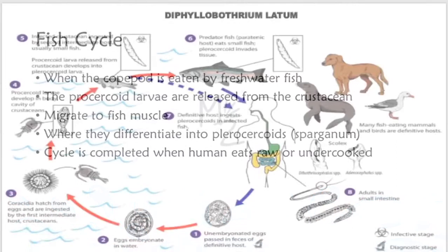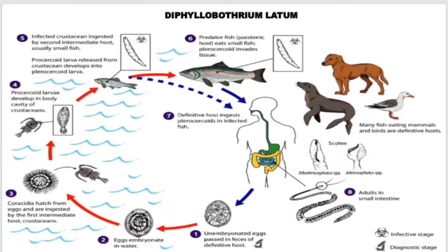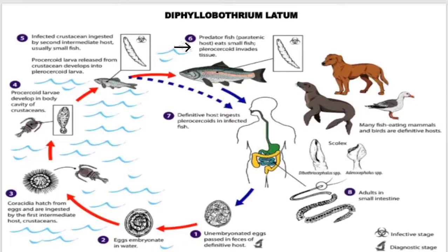Diagrammatic representation of the life cycle: unembryonated eggs are passed in the feces of the definitive host. The eggs embryonate in water and form coracidia, which hatch and are ingested by the first intermediate host, the crustacean. Procercoid larvae develop in the body cavity of the crustacean. An infected crustacean is ingested by the second intermediate host, usually small freshwater fish. The procercoid larvae develop into plerocercoid larvae in the fish muscle. Predator fish may then eat the smaller fish. These fish, when eaten undercooked by the definitive host (human), complete the cycle.